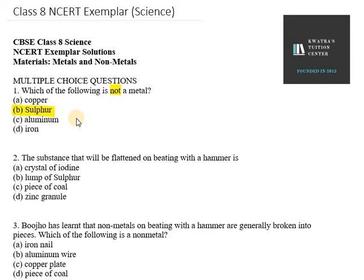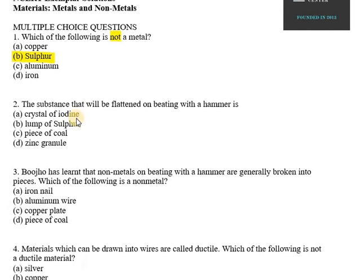Aluminum is a metal and iron is a metal. Moving on to question number 2: the substance that will be flattened on beating with a hammer — crystal of iodine, lump of sulfur, piece of coal, or zinc granules? On beating with a hammer, zinc granules, being a metal, will get flattened and thus possess the property of malleability. Malleability is the property of a material that can be beaten into thin sheets, so the answer is zinc granules.